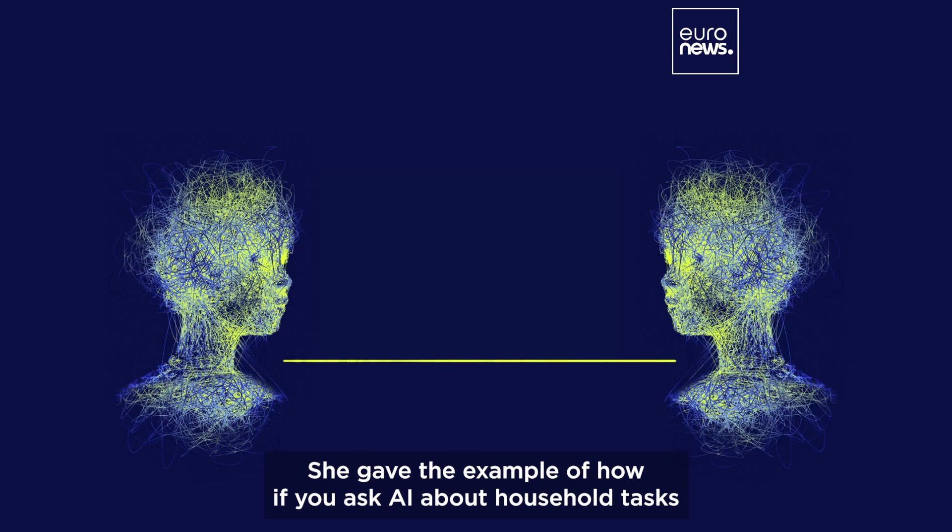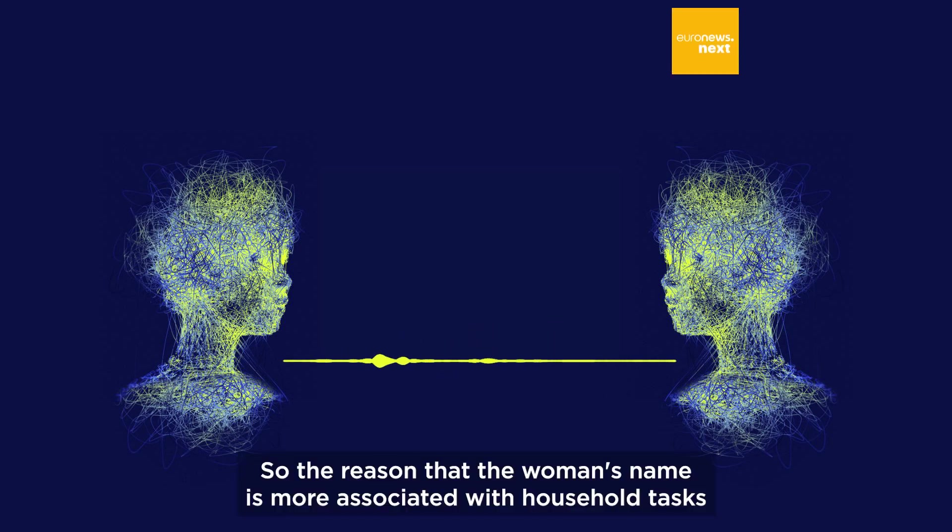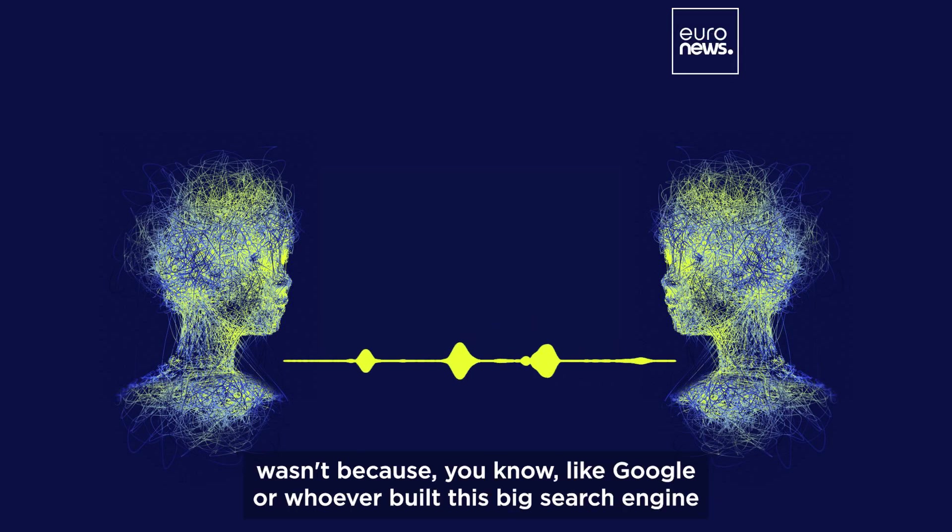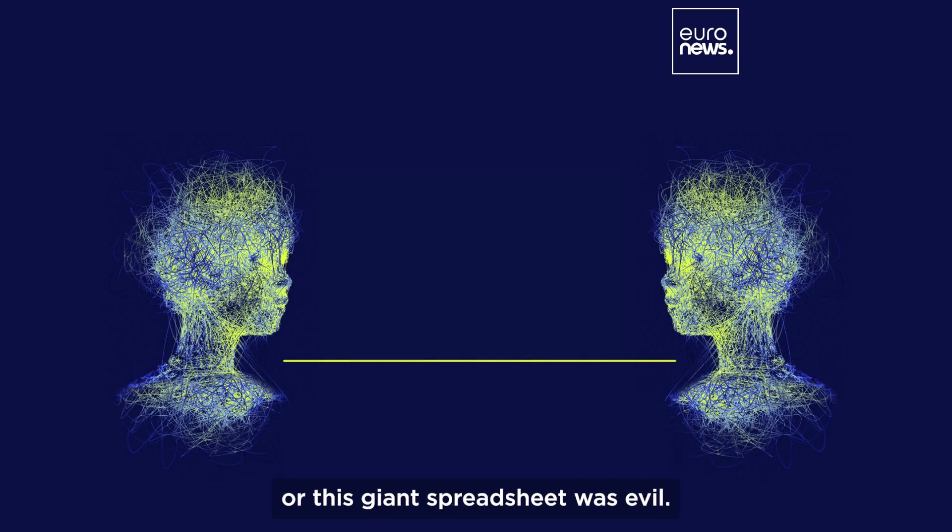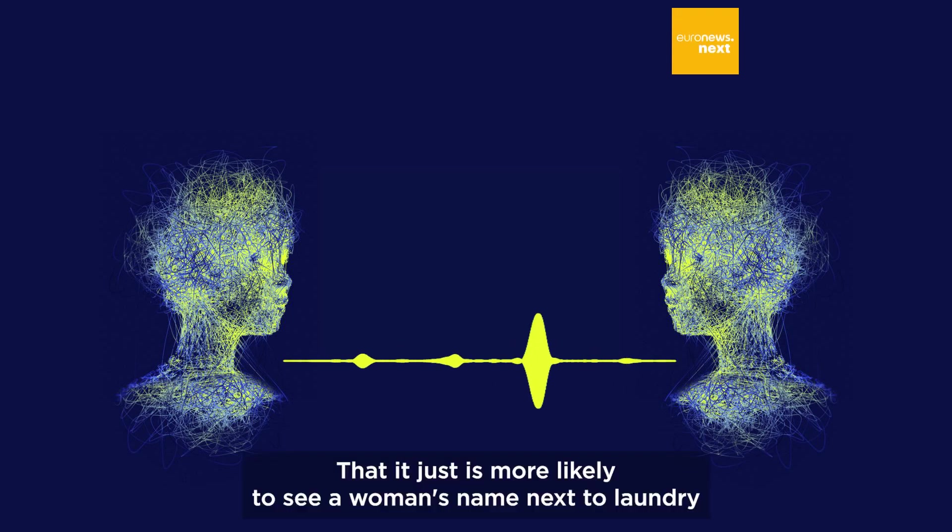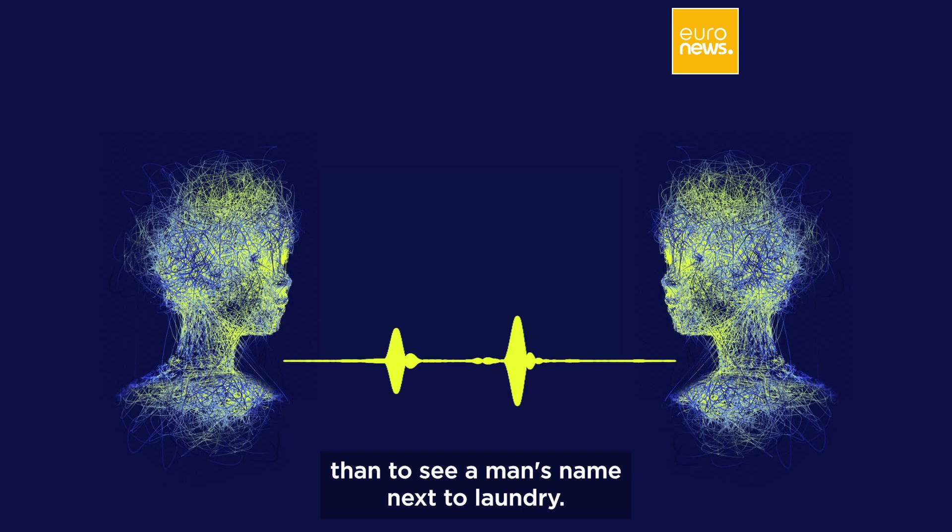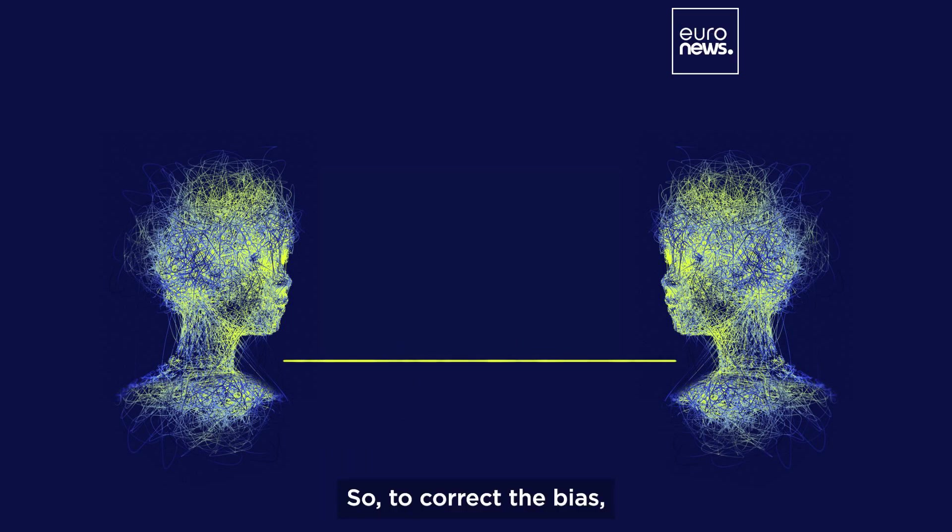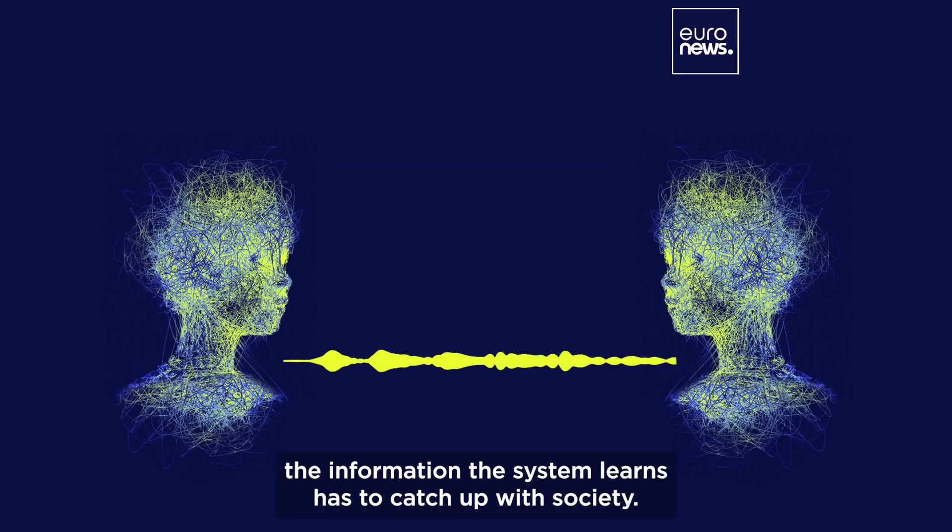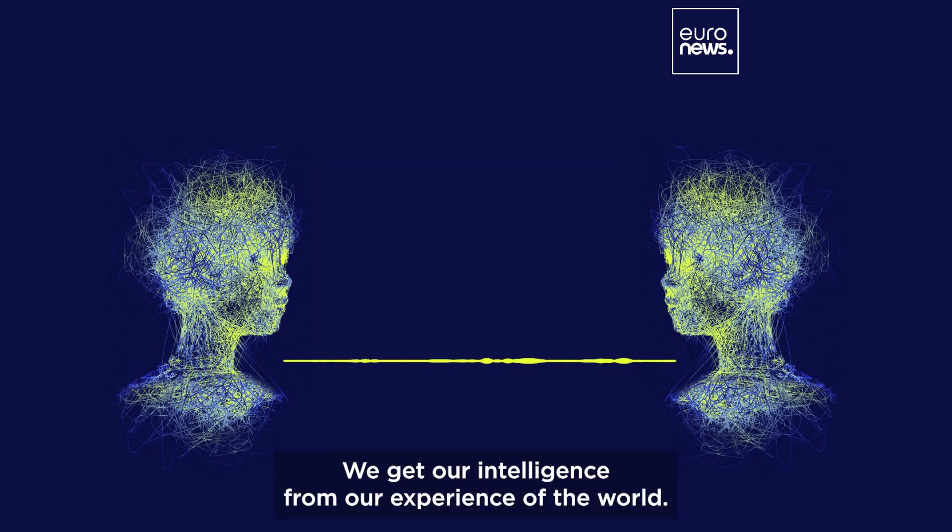She gave the example of how if you ask AI about household tasks, the results almost always involve women performing them. The reason that women's names were associated with household tasks wasn't because Google or whoever built this search engine was evil - it was because our culture was sexist. It just is more likely to see a woman's name next to laundry than to see a man's name next to laundry.